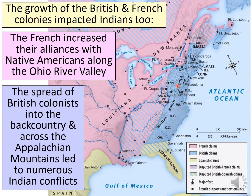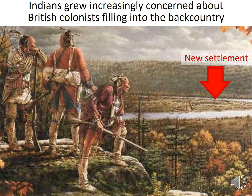The spread of colonists into the backcountry and across the Appalachian Mountains created a lot of conflict. The Appalachian Mountains marked the frontier at this point in time. Native Americans who had spent their entire lives moving across vast territories and who had fought hard against other tribes for control of those lands suddenly saw British settlements appearing. It worried them deeply, and many of them were going to fight to drive those settlers out of their land.